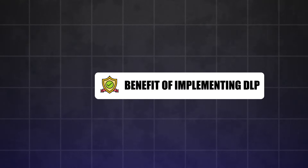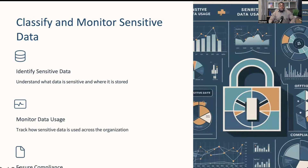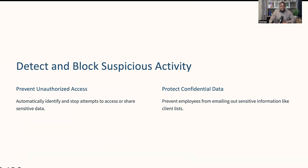Now that we understand the threats, let's talk about the benefits of implementing a DLP strategy. First and foremost, DLP allows you to classify and monitor sensitive data — identifying what data is sensitive, where it is stored, and how it is used across your organization. For example, knowing which documents contain customer personal information and ensuring they are handled correctly. Another key benefit is the ability to detect and block suspicious activity — with DLP in place, you can automatically identify and stop unauthorized attempts to access or share sensitive data. Imagine an employee trying to email a confidential client list outside of the company; a DLP system can prevent that from happening.